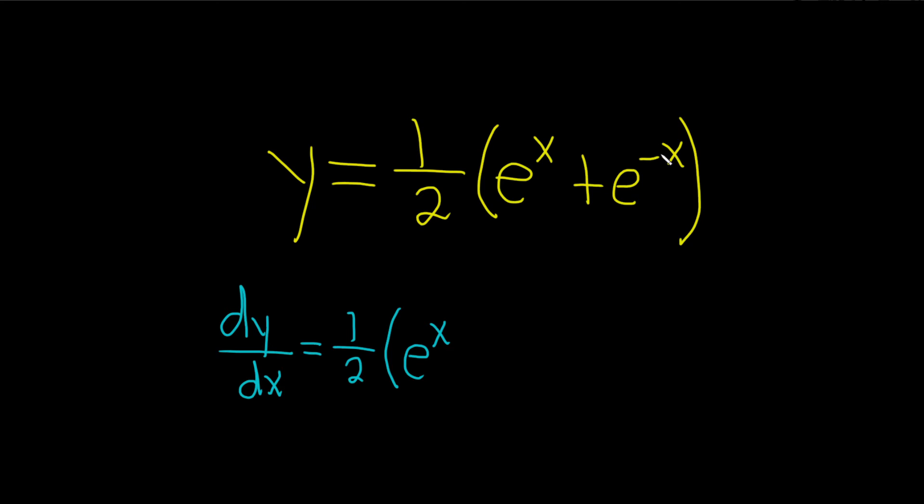And then here when we take the derivative, we have to use the chain rule. The chain rule basically says that we take the derivative of the outside, so e to the x is just going to be e to the x, and you leave it evaluated at the inside like this.